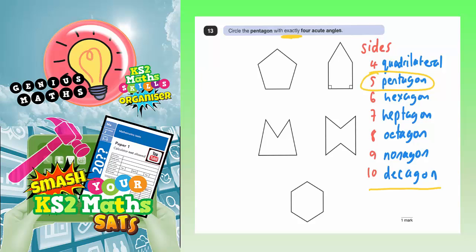This shape here has got one, two, three, four, five sides, so that is a pentagon. This one's got one, two, three, four, five, so that's a pentagon. One, two, three, four, five sides, that's a pentagon. One, two, three, four, five, six sides, so that one's actually a hexagon, so we can forget about that one straight away.